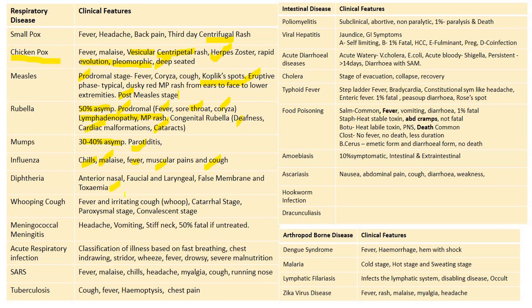Whooping cough presents with fever and an irritating cough, followed by a catarrhal stage and a paroxysmal stage. In meningococcal meningitis there will be headache, vomiting, and stiff neck. It is 50% fatal if untreated, with a short incubation period and the potential for sudden death.